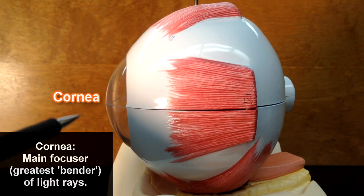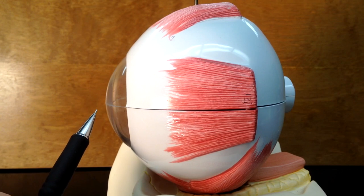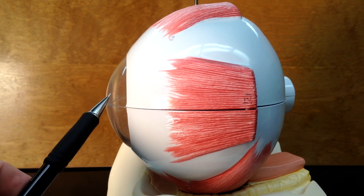The lens that we'll see on the inside of the eye, the lens is more of a fine focus. But this will focus the light the most, the cornea.